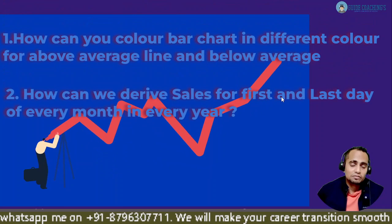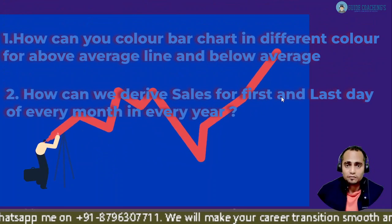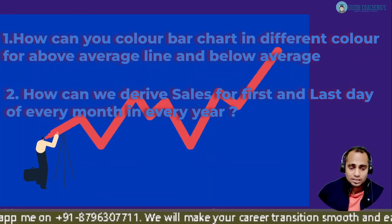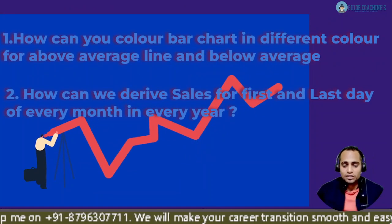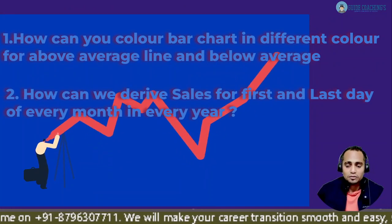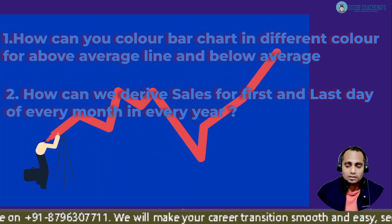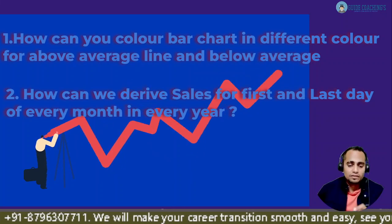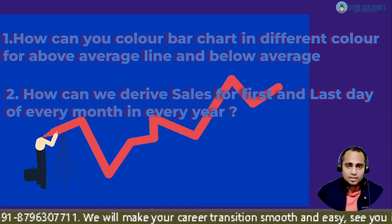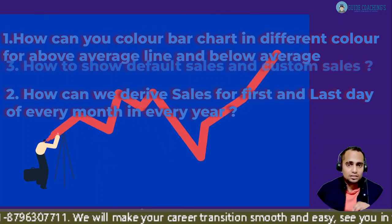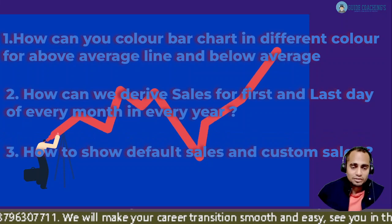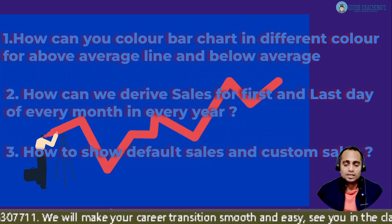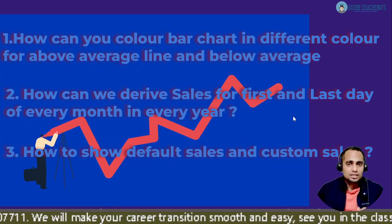The second question is: how can we derive sales for the first and last day of every month in every year? And the third question is: how to show default sales and custom sales.